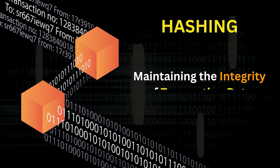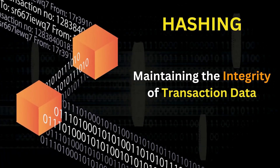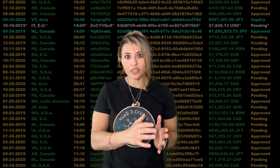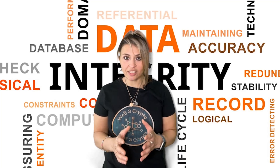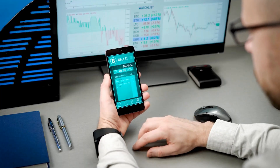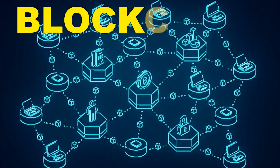In the world of Bitcoin, hashing is used for several critical functions. When a Bitcoin transaction is created, it's hashed, and this hash is then used to link it securely to other transactions, forming a chain — hence the term blockchain. Every new block added to this chain is identified by its own unique hash, generated from the hashes of the blocks before it.